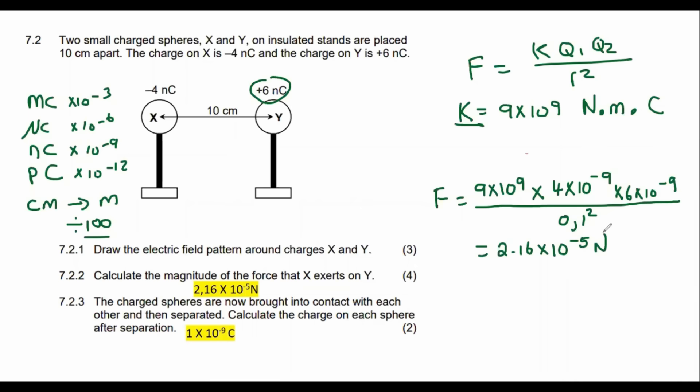You cannot say left or right because X is going to go towards Y. But we could say something like attraction if you wanted to. But they just said calculate the magnitude. So that just means the size. All right. Let's quickly take a trip into grade 10 science.